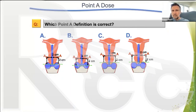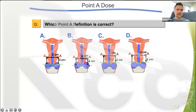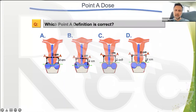Based on the answers in the chat, approximately 90% of you say C is the correct answer, with some choosing A and one or two choosing B and D. C is correct. As presented in the Manchester system definition, Point A is two centimeters from the top of the vaginal applicators — so ovoids or ring, not the flange, not the center of the ovoids. D is wrong because it measures from the lateral edge of the tandem; it should be from the center of the tandem laterally.